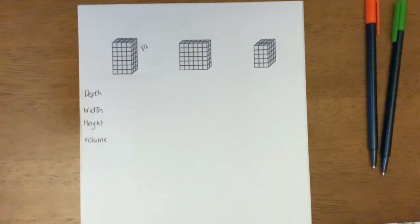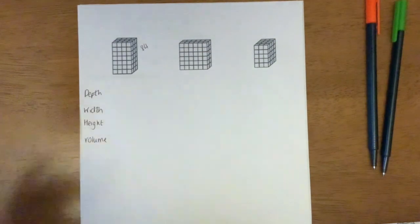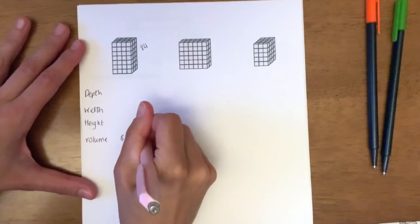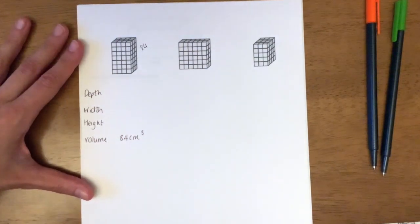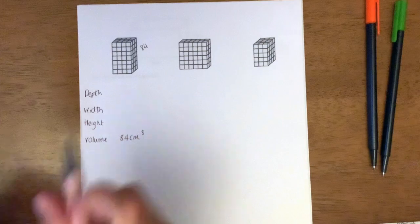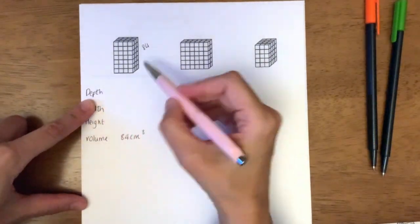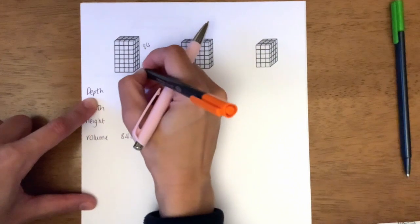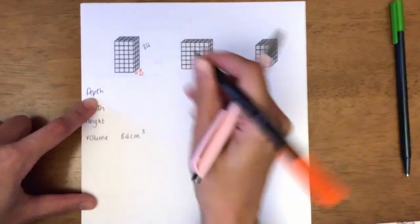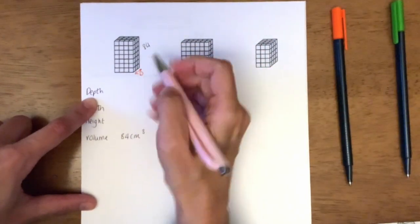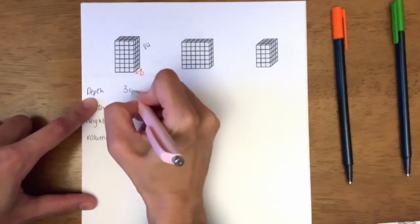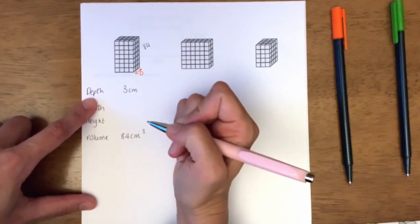We know that it's 84, and our units are centimeters cubed. The depth of the shape is how far back it goes. I can label that there - D for depth. I can see it goes back three, so it goes back three centimeters. These are each centimeter squares.